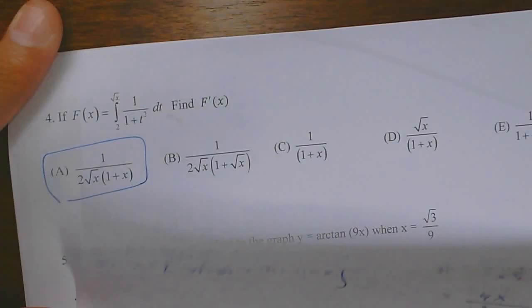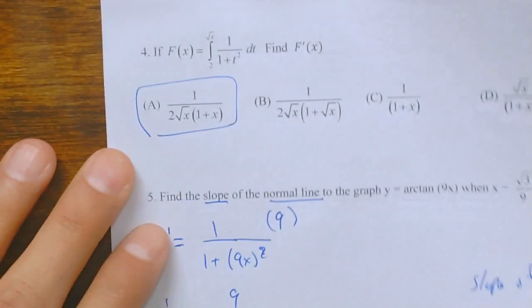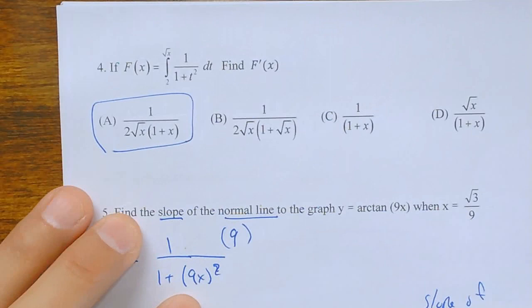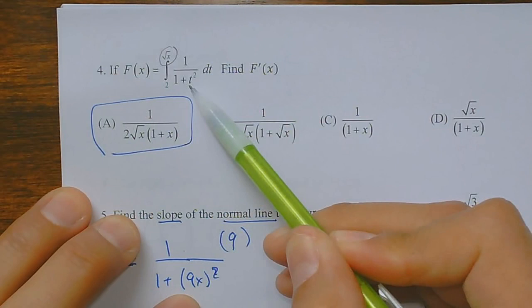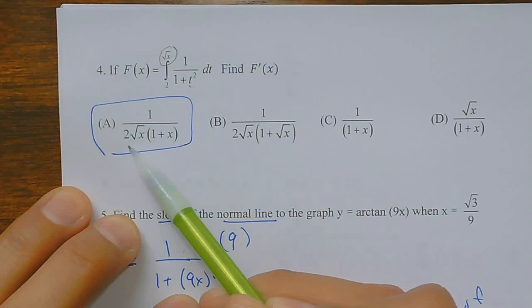Number four is the Second Fundamental Theorem of Calculus. There is no way around it — you need to know it. Take the top function, plug it in, then take its derivative using the chain rule. That gives one over two root x.